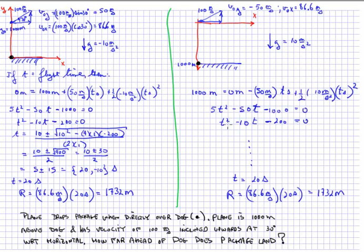Dividing through by 5, I get t squared minus 10t minus 200 is equal to 0, which is the same equation as I have over here, and so it's going to have the same solutions. Again, I'm going to choose 20 seconds, and I'm going to get that range.